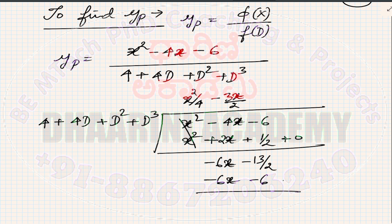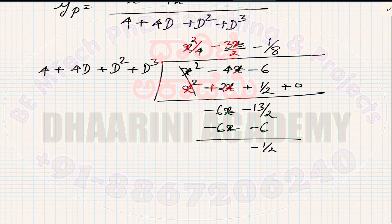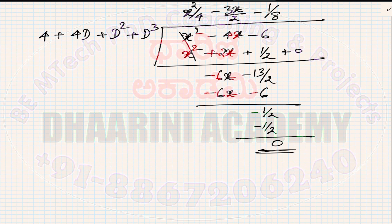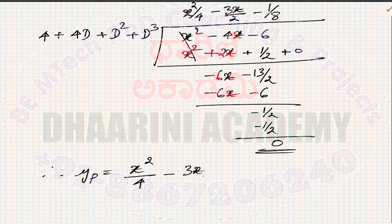Final quotient term: 4 × (1/8) = 1/2... so 4 × (−1/8) gives −1/2. Remainder = 0. Therefore yp = x²/4 − 3x/2 − 1/8. This is equation 2. The final answer is y = yc + yp = c₁e^(−x) + c₂cos(2x) + c₃sin(2x) + x²/4 − 3x/2 − 1/8.